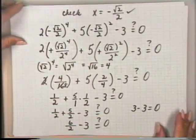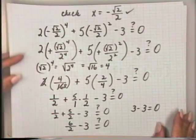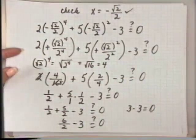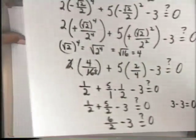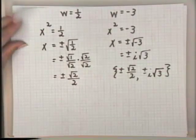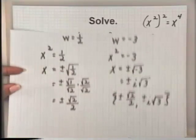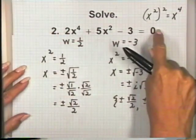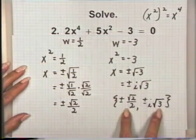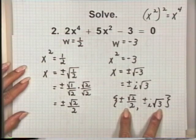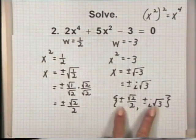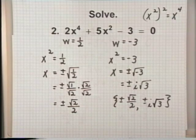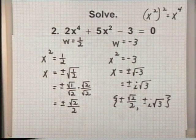Our solutions for this equation are plus or minus the square root of 2 over 2, and plus or minus i times the square root of 3. I will leave the check of the other solutions in this problem to you.